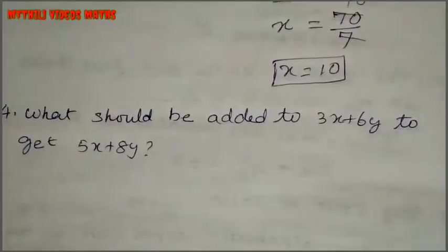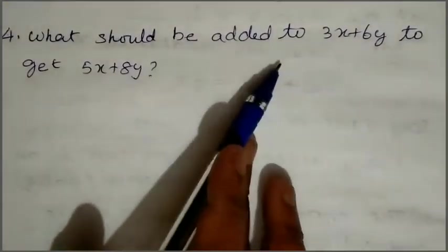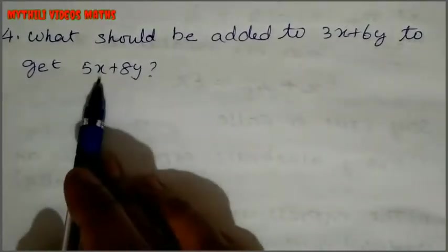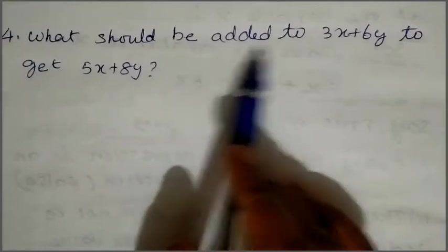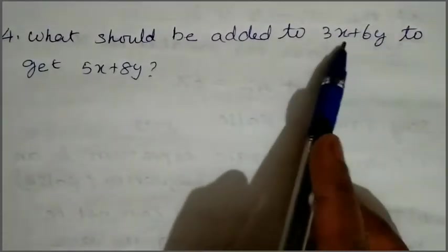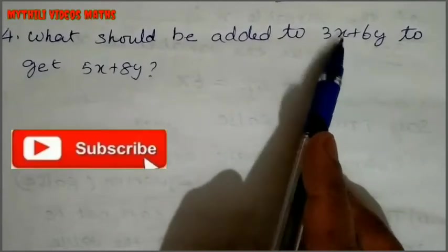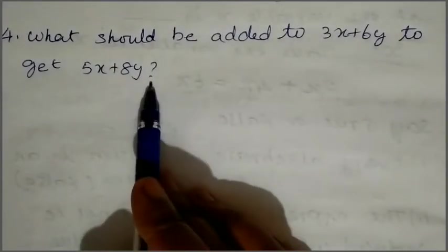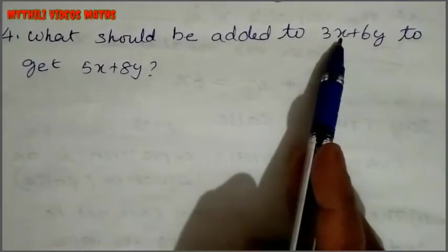In this fourth sum, what should be added to 3x plus 6y to get 5x plus 8y? So we have to add something to 3x plus 6y to get 5x plus 8y.